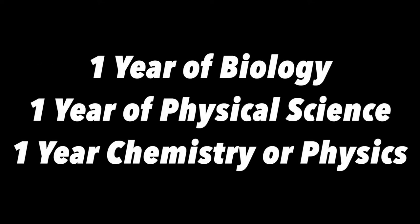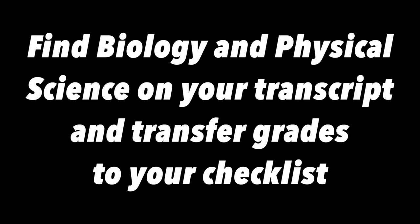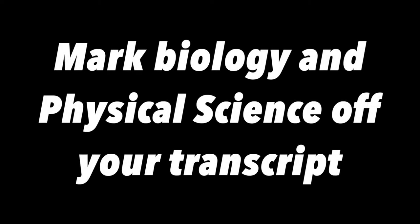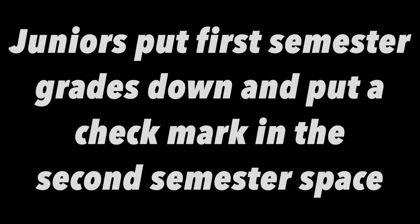Now let us look back at the science section on the checklist. All students need 3 years of science in high school or 6 credits. A year of biology and a year of physical science — which could also include chemistry or physics — is required. Find biology and physical science on your transcript and transfer those grades to your checklist and mark them off the transcript. For juniors, you are probably taking your third year now, so put first semester grades down and put a check mark in the second semester space.